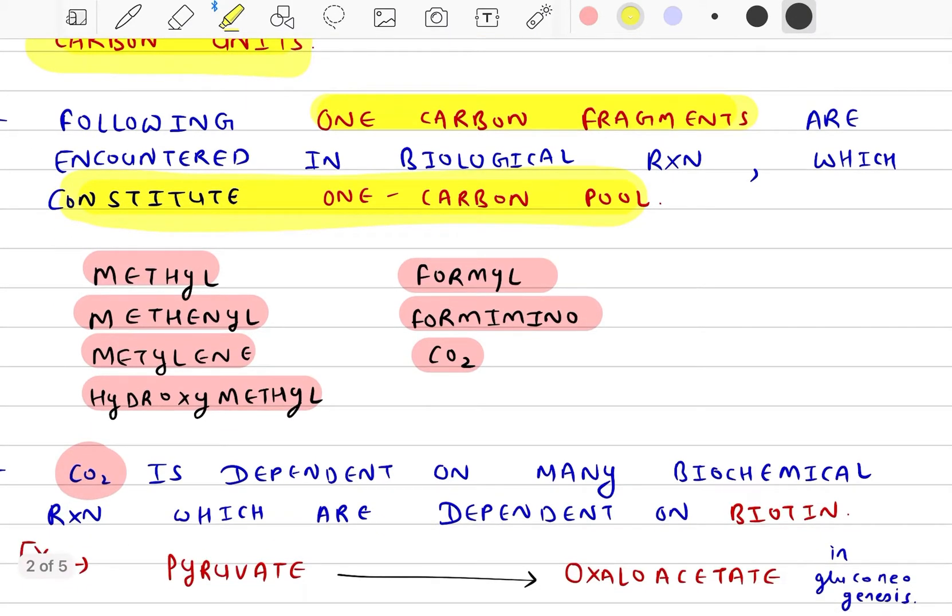Which groups do we include in one carbon metabolism? Methyl, Methylene, Hydroxymethyl, Formyl, Formimino and CO2.